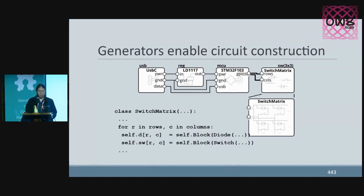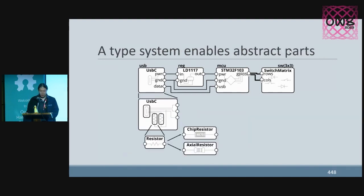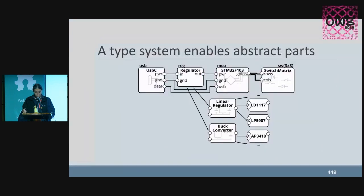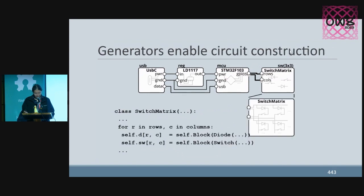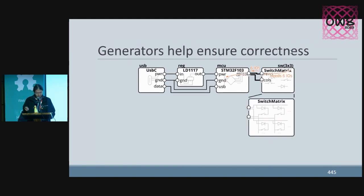Beyond what's possible with hierarchy sheets in KiCAD, we have generators. As blocks are defined the same way as the top-level circuit, we can use the full power of Python to generate the circuit. For example, this switch matrix has this nice for loop to create and connect switches based on the number of rows and columns. This also extends to arbitrary calculations, for example, sizing components in the switching converter based on the input and target output voltages.